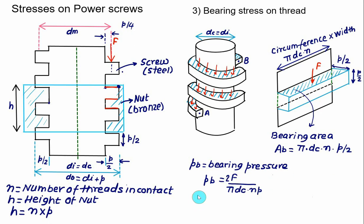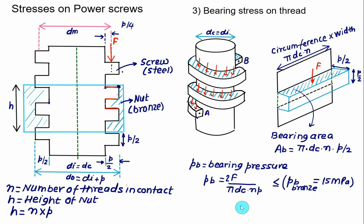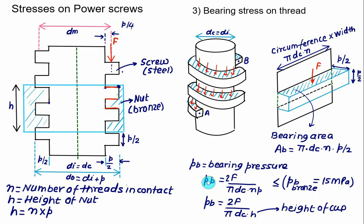Since h = n × p, the bearing pressure can also be expressed as: **pb = 2F / (π × DC × h)**, where h is the height of the nut. The bearing pressure pb and bearing stress sigma_b are the same quantity — both equal 2F / (π × DC × h).